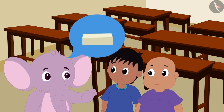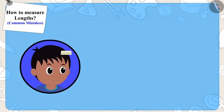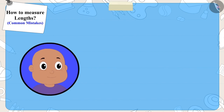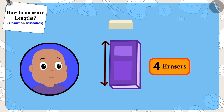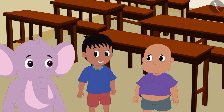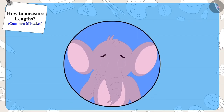First, Raju measured the notebook with an eraser. The length of Raju's notebook was five erasers long. Now Bablu also used the same eraser to measure the length of his notebook, but Bablu's notebook was only four erasers long. Raju started teasing Bablu, saying that his notebook was longer.